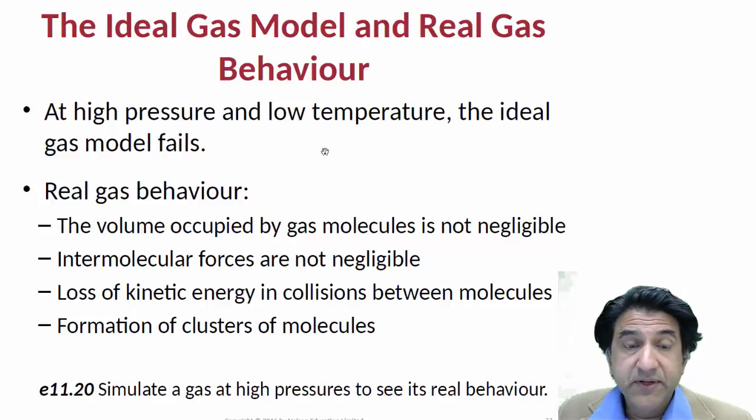So how do they differ? Well, the principal points at which they differ is at high pressure and low temperature. At low temperature, because as the temperature becomes lower, a gas actually condenses into a liquid, whereas an ideal gas remains a gas, no matter what the temperature.